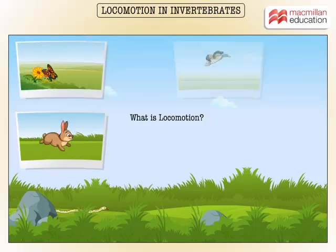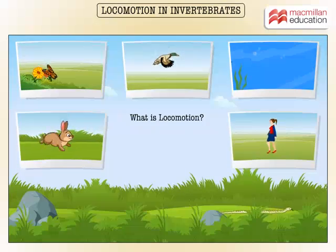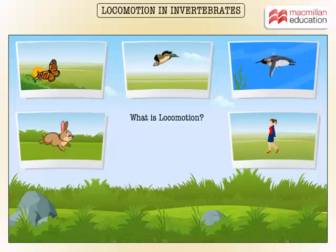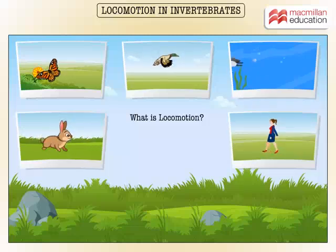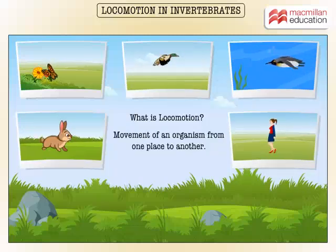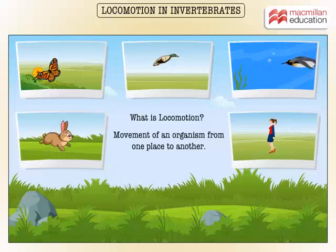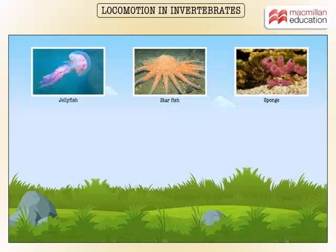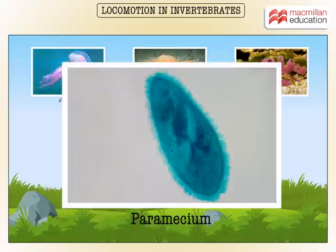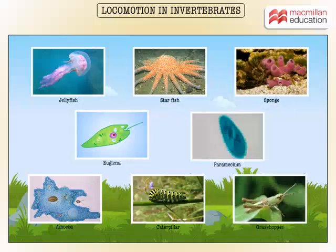Animals move in search of food, water, shelter, or to protect themselves. They also move for reproduction. This movement of an organism from one place to another is called locomotion. Animals without the backbone are called invertebrates. Let's find out how locomotion happens in invertebrates.